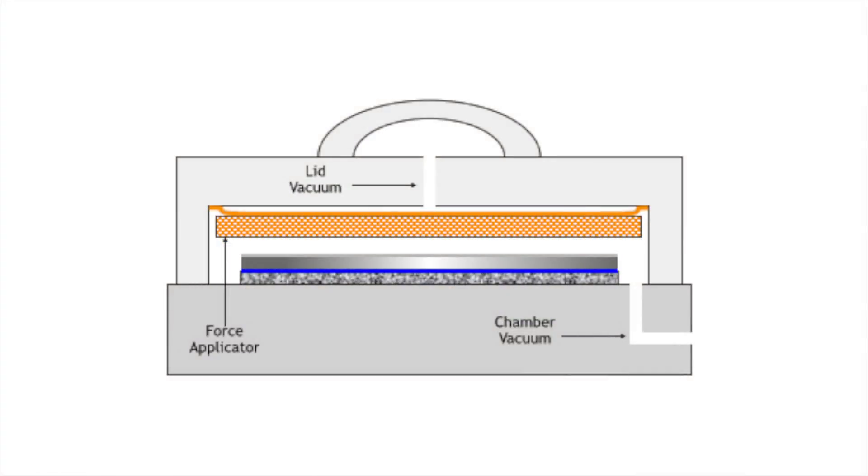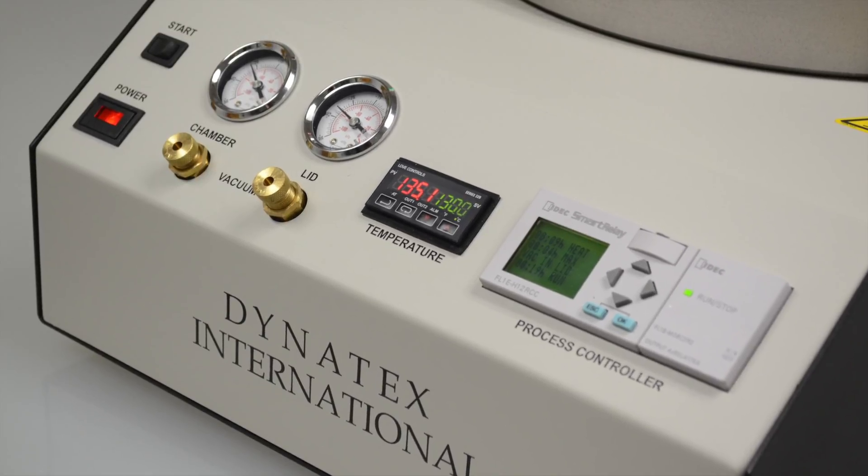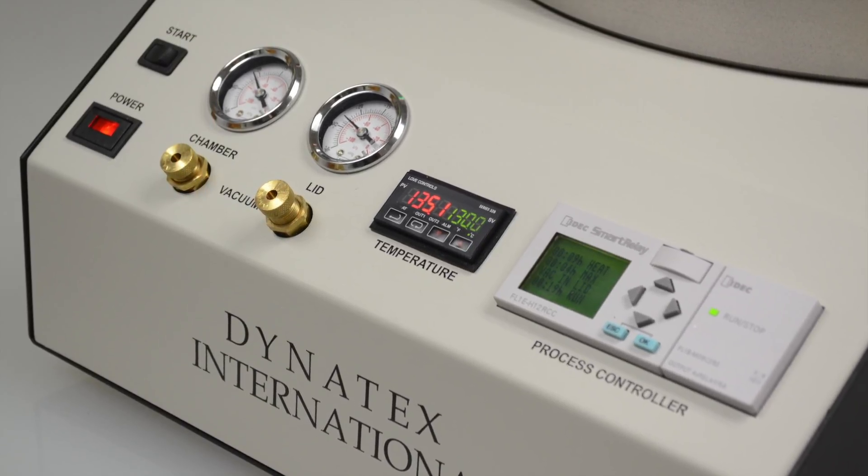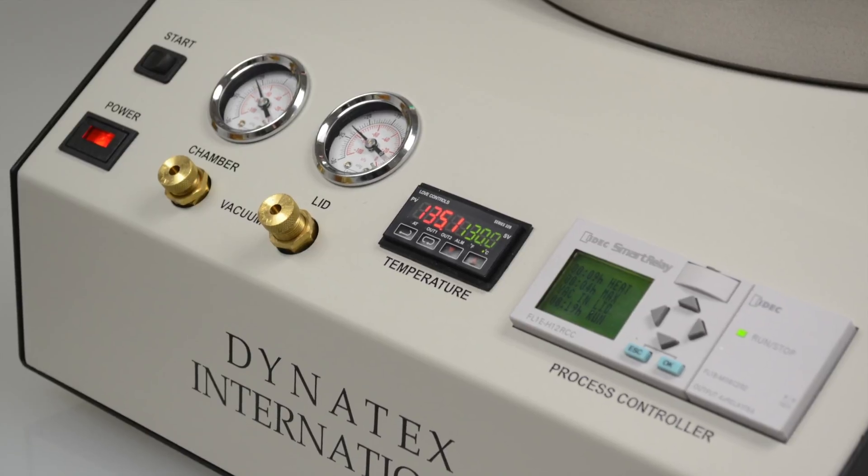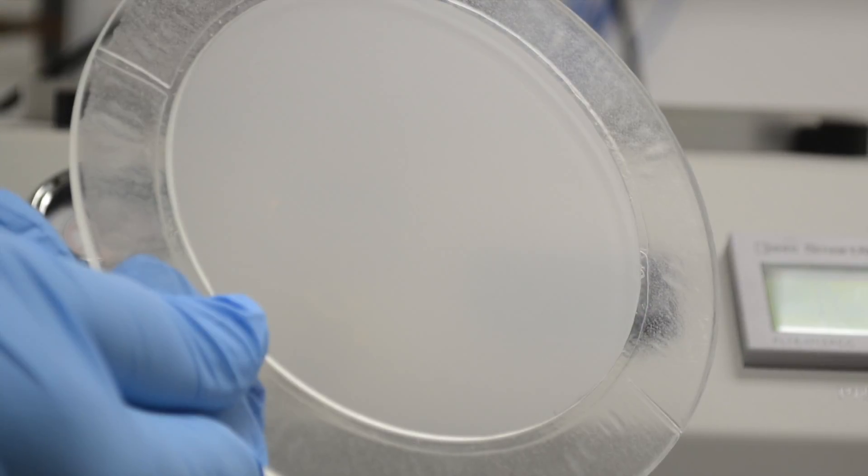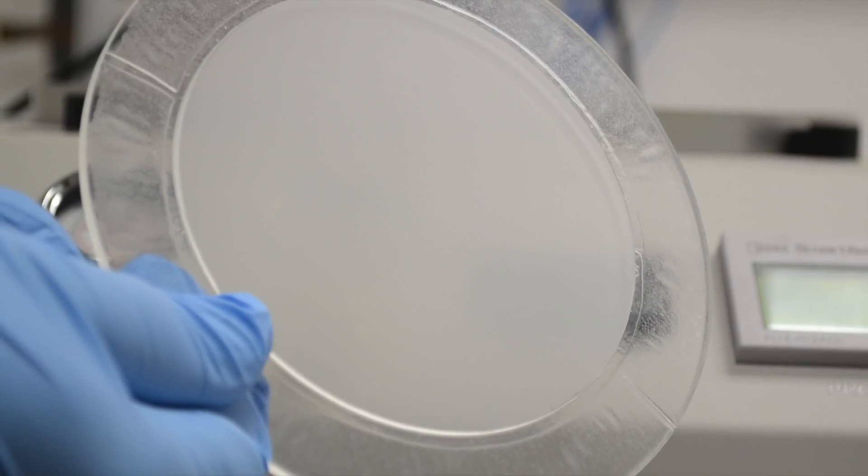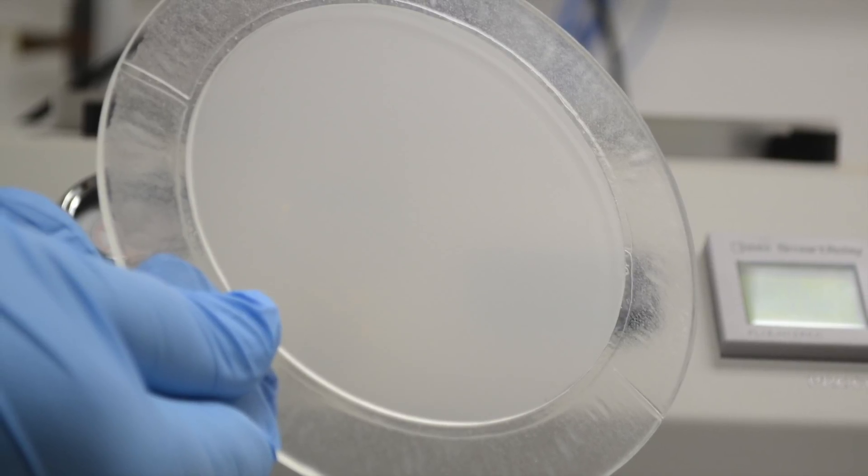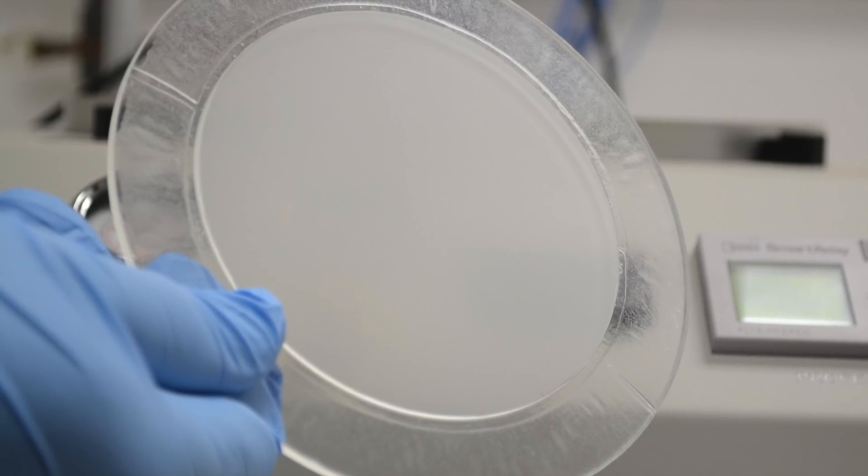The digital temperature controls allow the DXB bonder to precisely regulate bonding temperature to ensure consistent bonding. When used with Dynatex's wafer grip, the DXB bonder facilitates process improvement by providing consistent, void-free results while reducing process cost with its decreased cycle time.